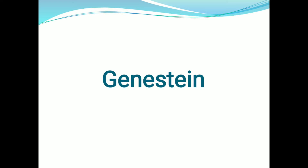Genistein was first isolated in 1899. The compound structure was established in 1926, when it was found to be identical with that of Prunitol. It was chemically synthesized in 1928.